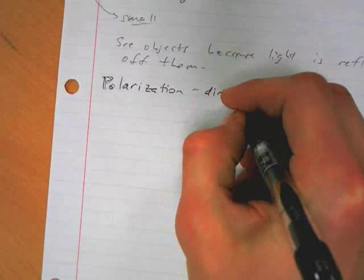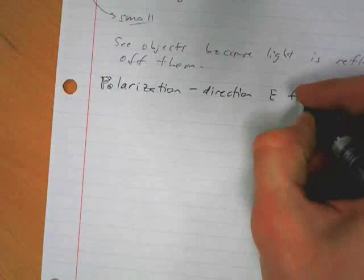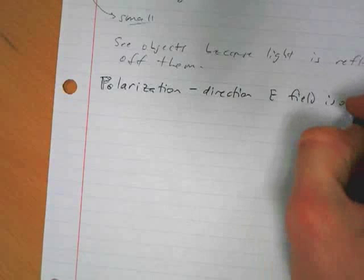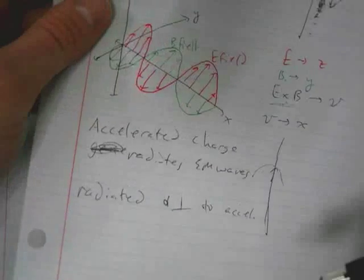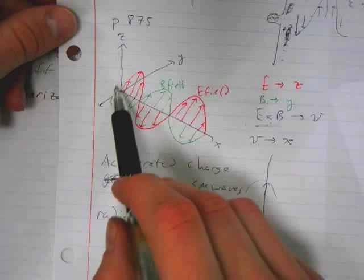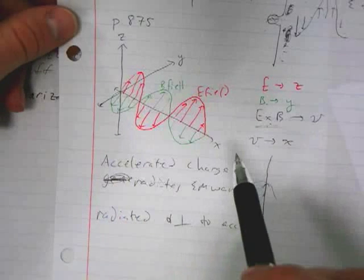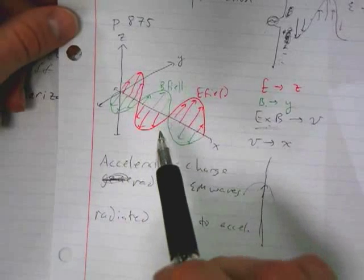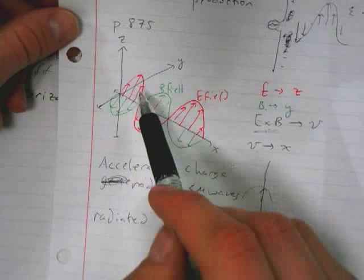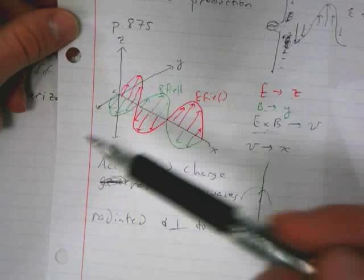Polarization is defined as the direction that the electric field is oscillating for an electromagnetic wave. So in the case of what I drew back here, if we pretend that the E field is oscillating in the Z direction, then this wave would be said to be polarized in the Z direction.